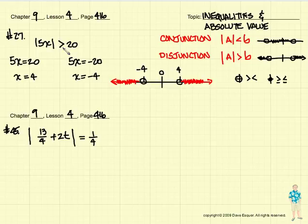Number 27 said make a graph of this inequality: the absolute value of 5x is greater than 20.